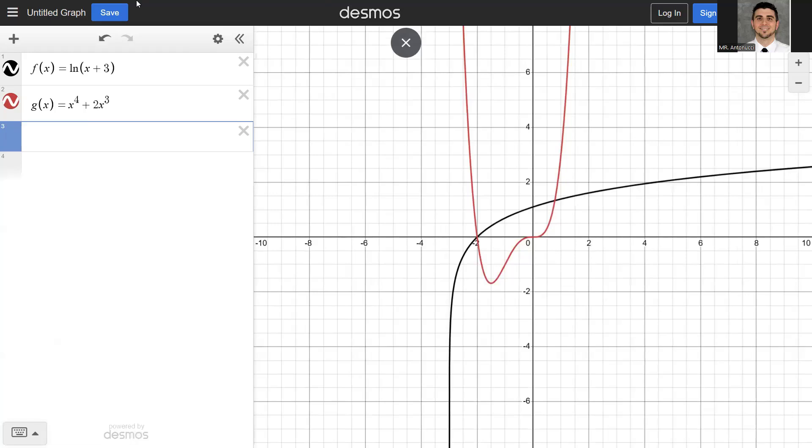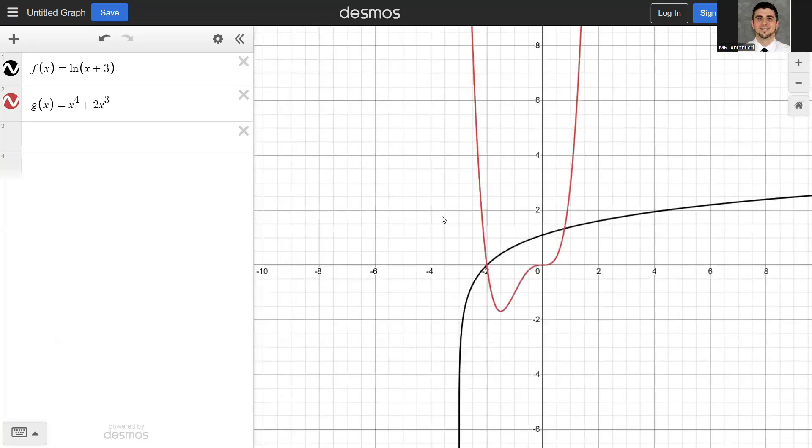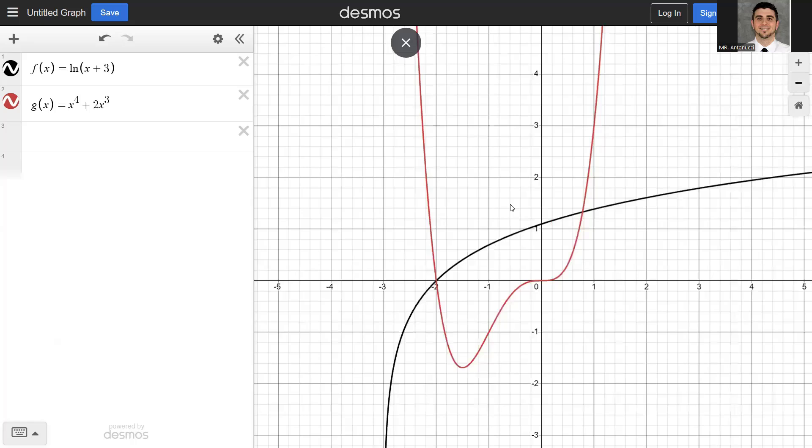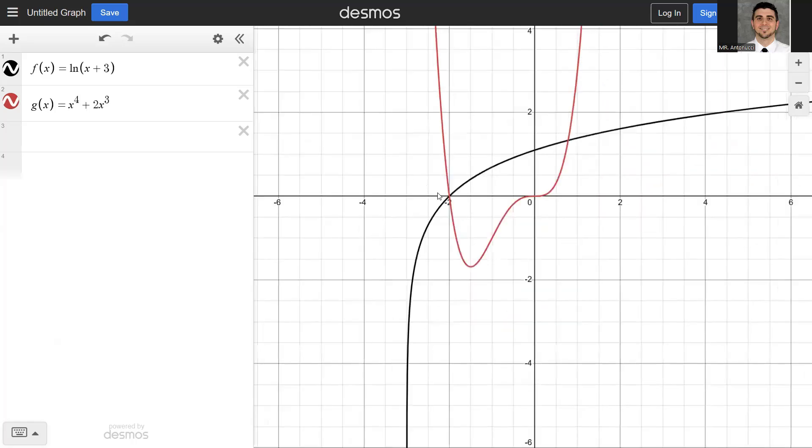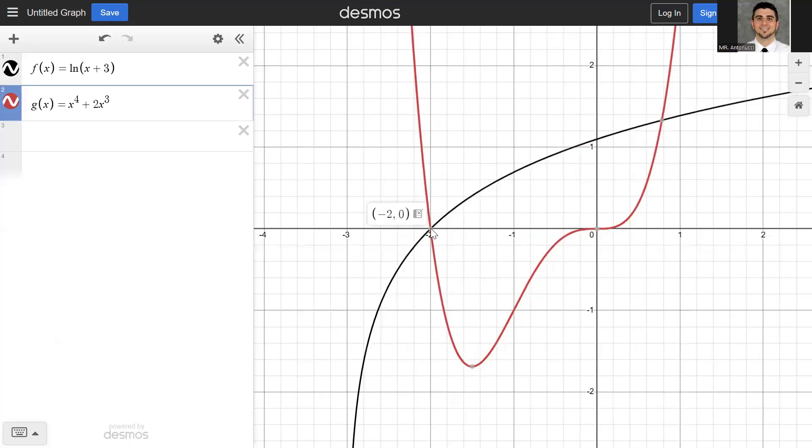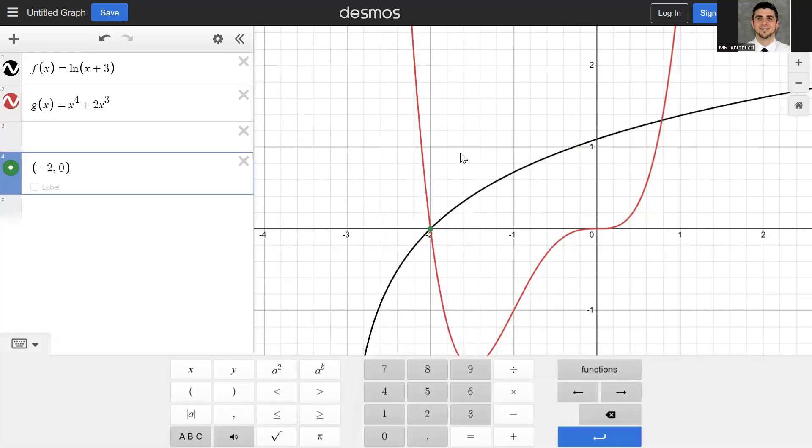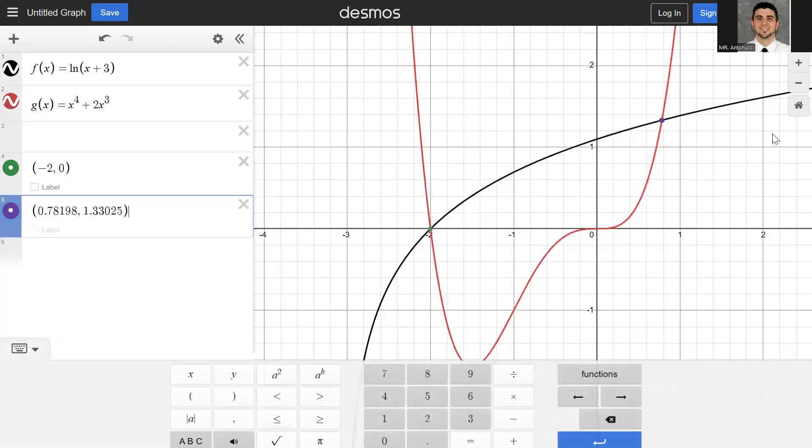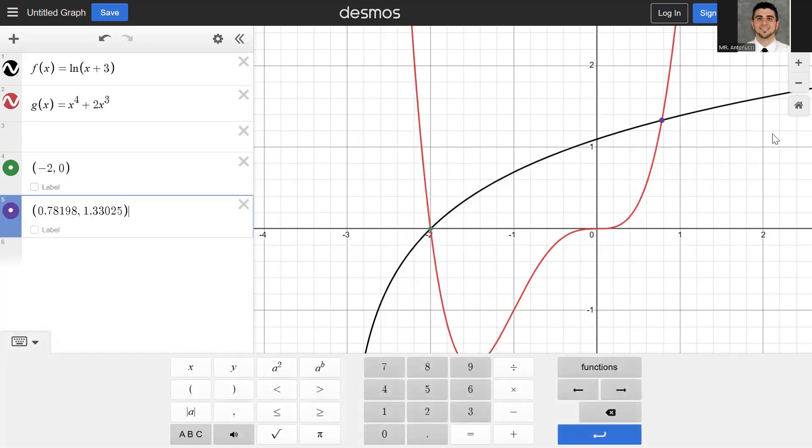You want to hit that home button so you make sure that you're able to see where the intersection points are. And you can also move it around, roll up and down on your mouse or plus or minus here and check out the different viewing window. Well, we can definitely see the two intersection points. So one is right here. That's at (-2, 0). So you could put that there. And the other one is right here. It's at 0.78198.